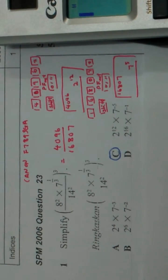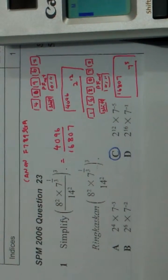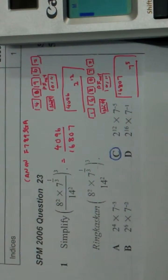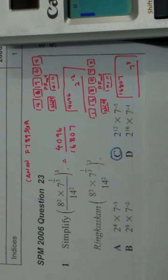So we have this question: x square times 7 to the power 1 over 3, the whole thing divided by 14 square and then cube.